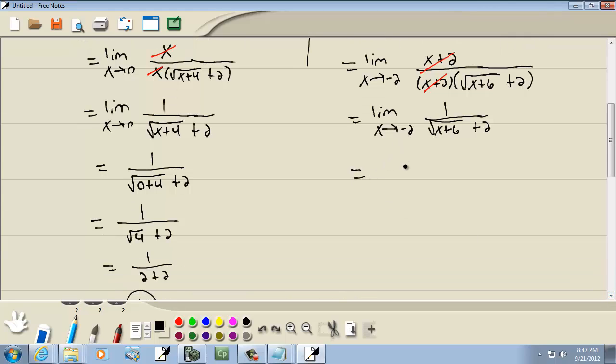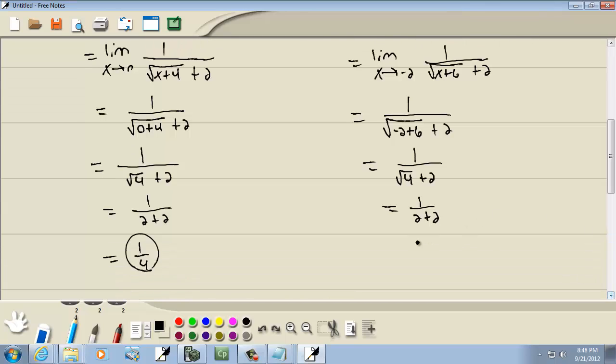And we're going to plug in a negative 2 now for x. We can do direct substitution. So we've got 1 over square root of negative 2 plus 6 plus 2. So it's 1 over square root of 4 plus 2, which is 1 over 2 plus 2, which gives us 1 fourth again.